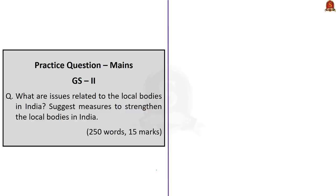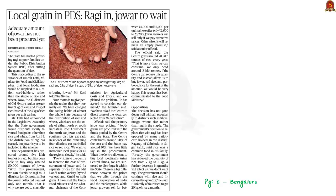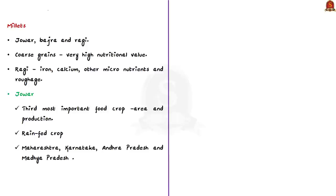The next discussion is about millets. The Karnataka state government has started providing ragi to poor farmers under the Public Distribution System after cutting the quantum of rice provided, and is also planning to include jowar under PDS. This move has received mixed reactions — some appreciated it because millets are a valuable source of nutrition, while others opposed the reduction in rice. Ragi and jowar belong to the category of crops called millets, also known as coarse grains. In India, jowar, bajra, and ragi are the important millets grown. Millets have a very high nutritional value — for example, ragi is very rich in iron, calcium, and other micronutrients.